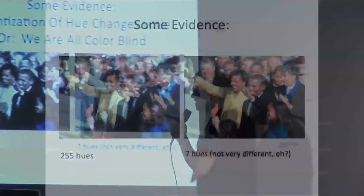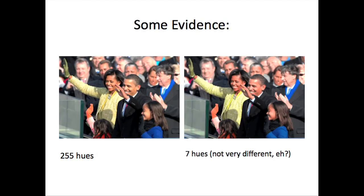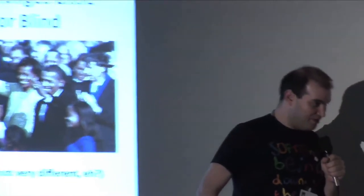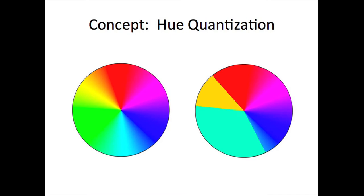And my proof is this image on the left has 255 separate hues. This image on the right has seven. Can you guys see a difference? Somewhere in our brain there is something that just says, well, it's close enough. It's a blue.